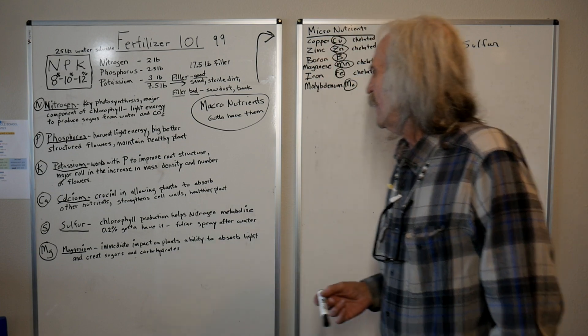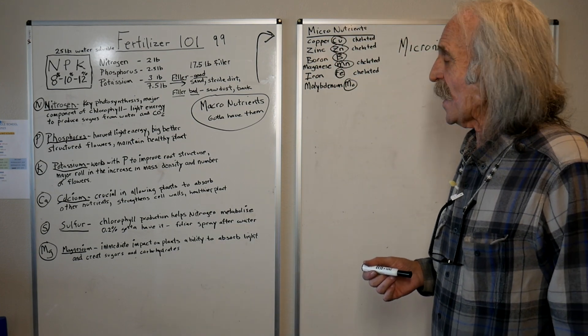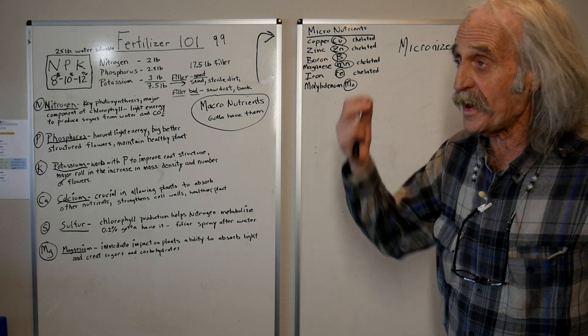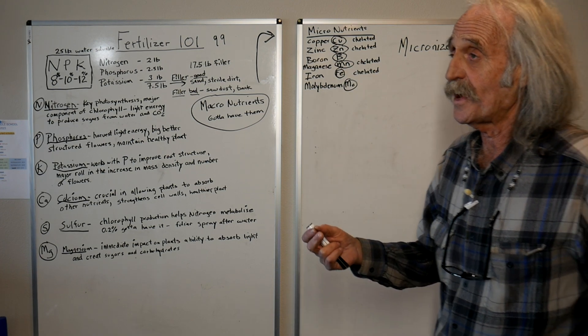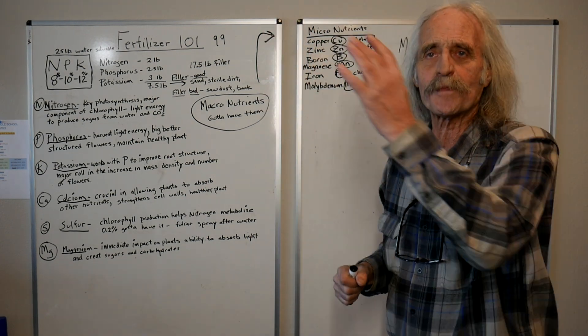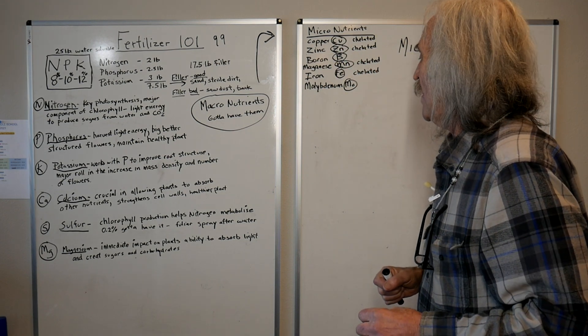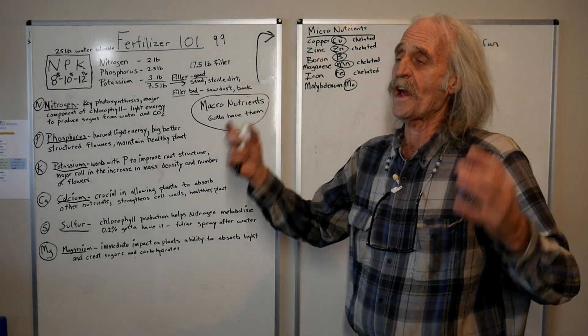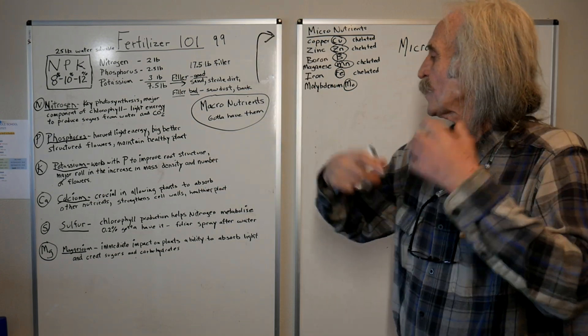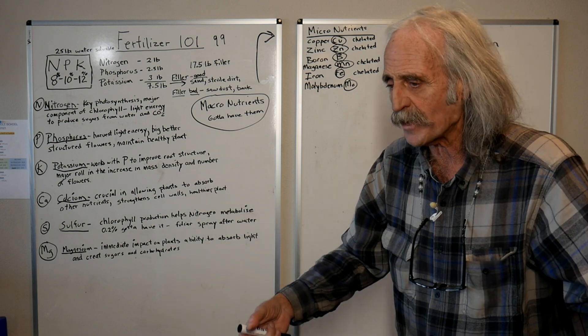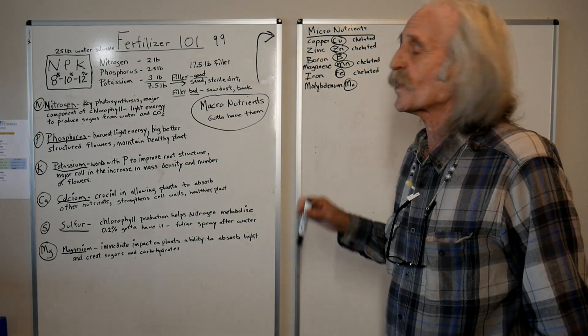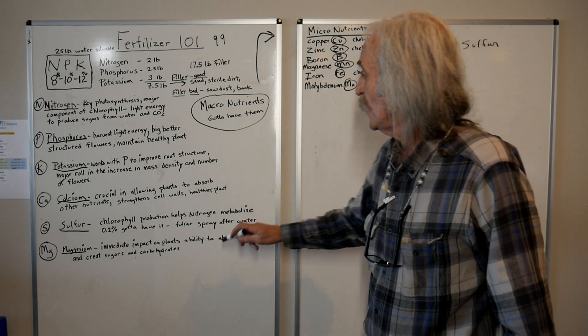Magnesium. It's another macronutrient that you got to have. It has an immediate impact on the plants to be able to more efficiently collect the photons, collect the light. And when the plant's able to easily absorb as much light as possible, it creates sugars, it creates carbohydrates, it makes your plant grow better, and you're going to have a much better success with it.